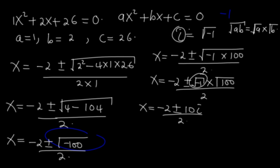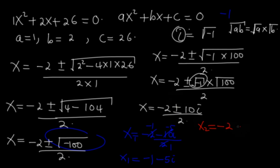For the above to be true, either x₁ = (−2 − 10i) / 2 = −1 − 5i, or x₂ = (−2 + 10i) / 2 = −1 + 5i.